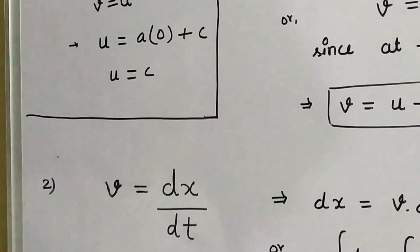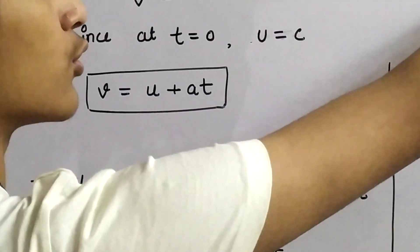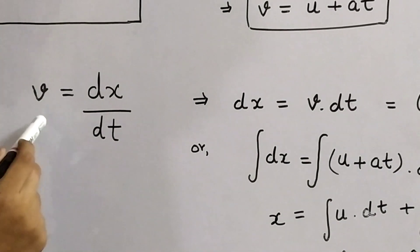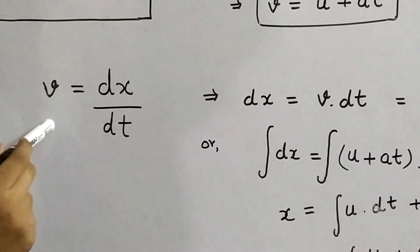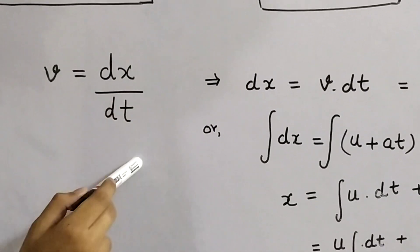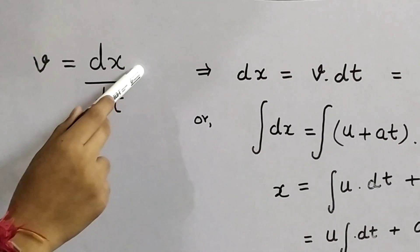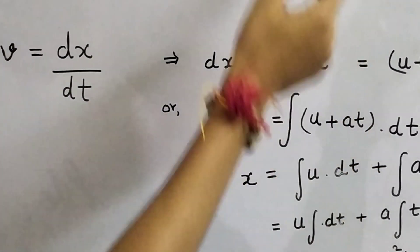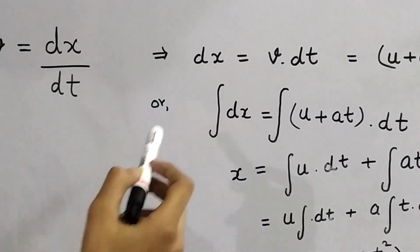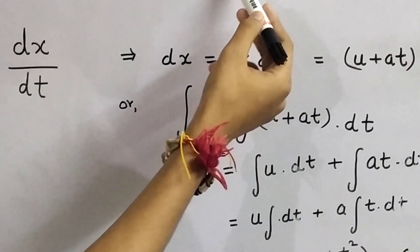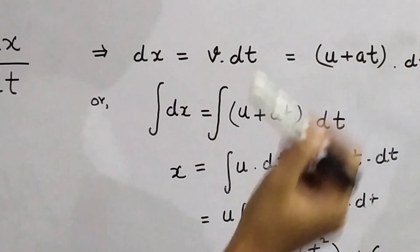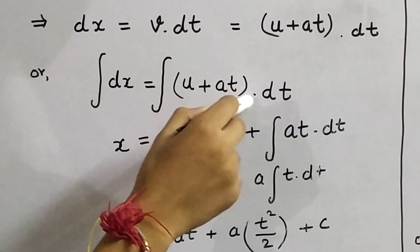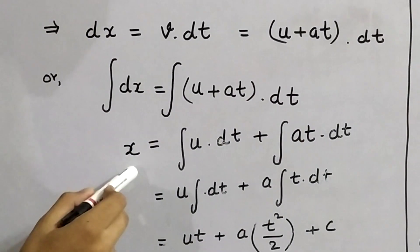Now, our task is to derive the second equation, which is S = UT + ½AT². To derive the second equation, we write the basic definition of velocity, which is V = dx/dt, where X is the position of a particle. This can be written as dx = V dt. We substitute the value of V from the first equation, that is dx = (U + AT) dt. Now, integrating both sides, we get the integral of dx = integral of (U + AT) dt.